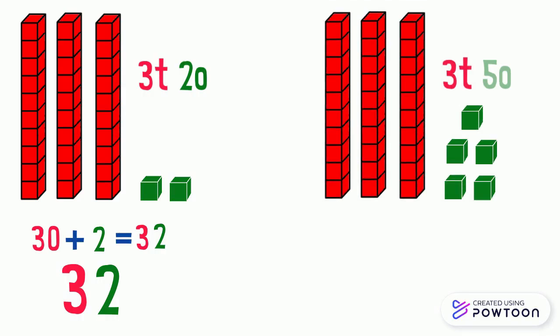And we have 3 tens and 5 ones. 3 tens equals 30, 5 ones equals 5. 30 plus 5 equals 35. So this number is 35.